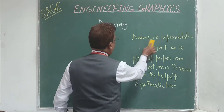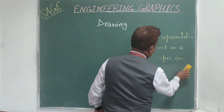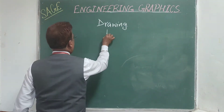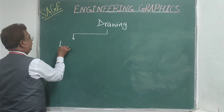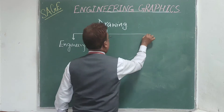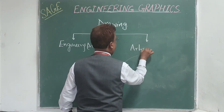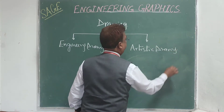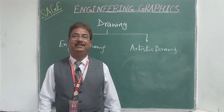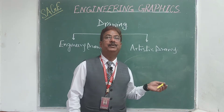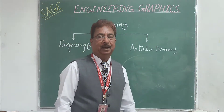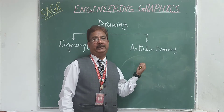Whenever some idea comes in our mind, the easiest way to express that idea is with the help of drawing. Drawing can be classified into two types: one is known as engineering drawing, which is our subject in engineering, and another classification will be artistic drawing. Normally when people think of drawing, they think of artistic drawing done freehand by artists.